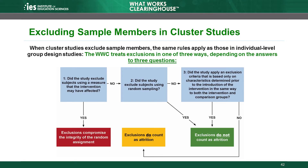Another issue that also applies to cluster studies is the exclusion of sample from analysis by the researcher. We first discussed this issue in the attrition module, which is Module 2. If excluding units creates differences between the intervention and comparison groups, it could introduce bias. Depending on the answer to three questions, the WWC treats the exclusions one of three ways.